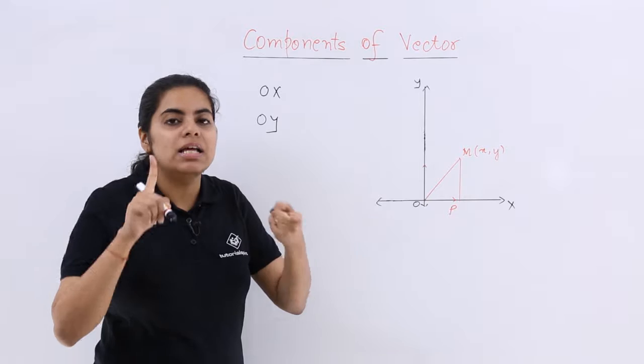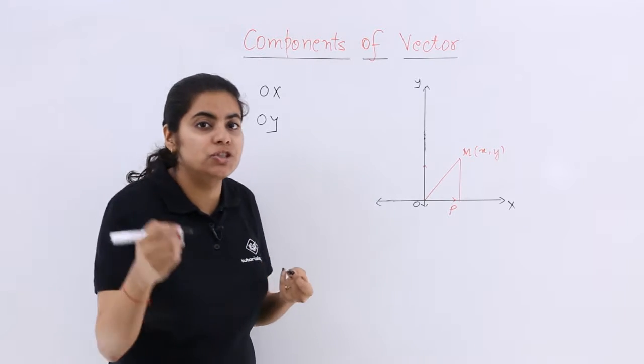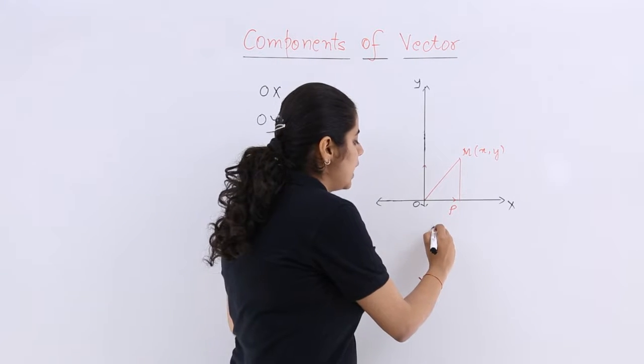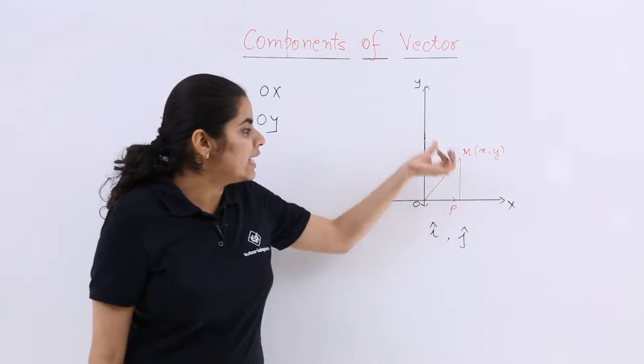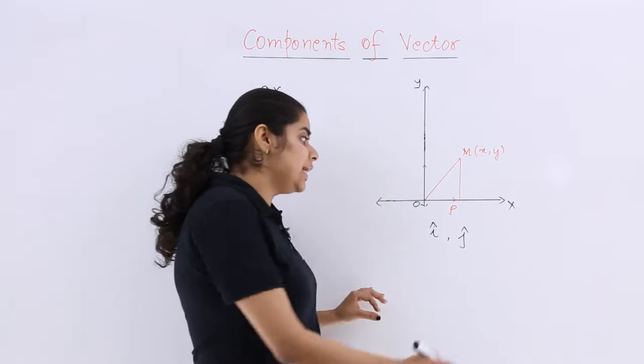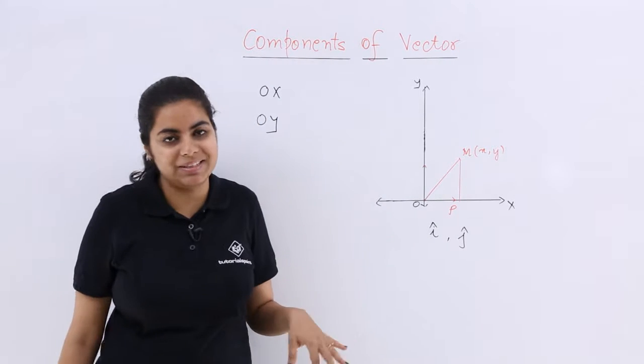Now please remember that the unit vector which helps with respect to x is your i cap and the unit vector with regard to the y is j cap. So i cap and j cap are specifically the unit vectors.